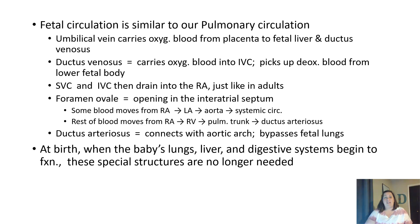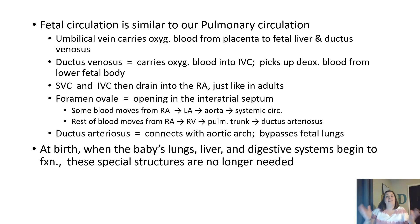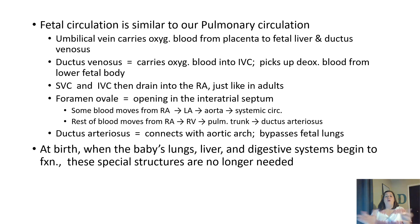The superior and inferior vena cava drain into the right atria of the heart, just as in adults. However, in the fetal heart there is a special hole called the foramen ovale — an opening in the interatrial septum between the right and left atria. Some blood moves from the right atria straight to the left atria, bypassing pulmonary circulation entirely, because there's no need to pick up oxygen in the baby's lungs even though the baby is practicing breathing. This allows blood to go from the left atria straight into the aorta and into systemic circulation.